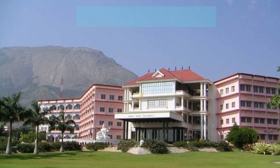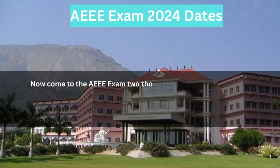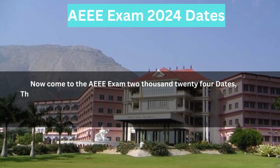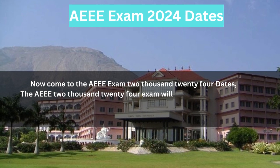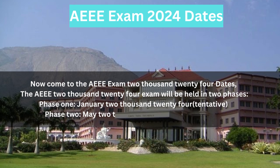Now let's come to the AE Exam 2024 Dates. The AE 2024 exam will be held in two phases. Phase 1: January 2024 (Tentative). Phase 2: May 2024 (Tentative).